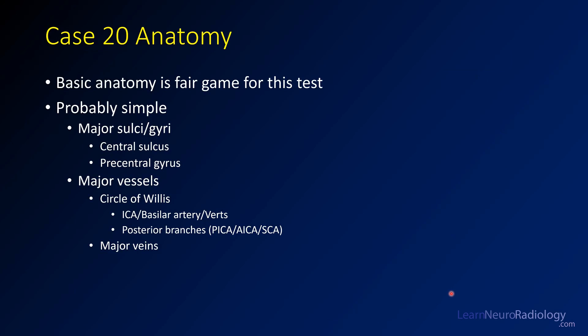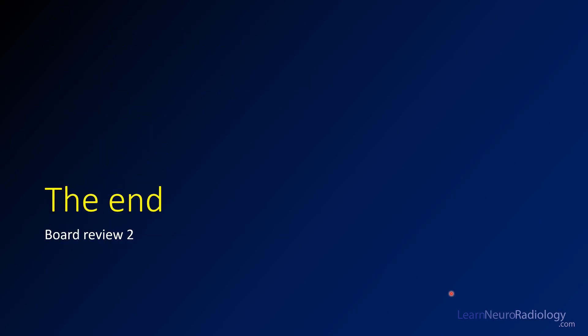Just remember, as you're studying for your test, that basic anatomy is really fair game. The major sulci and gyri you want to know, and the major vessels as well — veins are fair game too. On most neuroradiology tests, the degree of anatomy you'll be asked about is pretty large-scale; you're probably not going to be asked about really obscure structures. Thanks for checking out this board review — this brings us to the end of these 20 cases. Be sure to check back for more later.